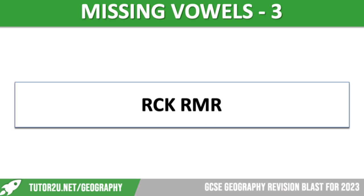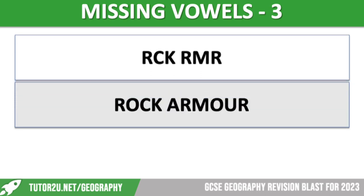Next one — first word quite easy, second word possibly not so much. It is rock armour. These are big boulders placed at the bottom of a seawall or at the bottom of a cliff. At the bottom of a seawall they protect and stabilise it. At the bottom of a cliff they slow down the rate of erosion — the water goes between the gaps in the rock and slows down, so the energy is dissipated. It does the same job as gabion cages, which are metal cages full of smaller rocks placed at the cliff base.